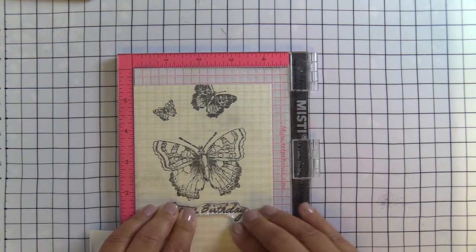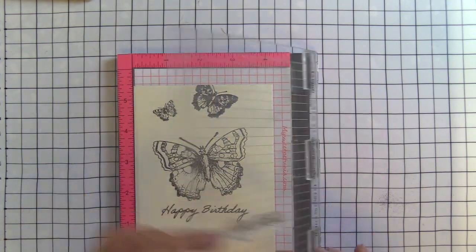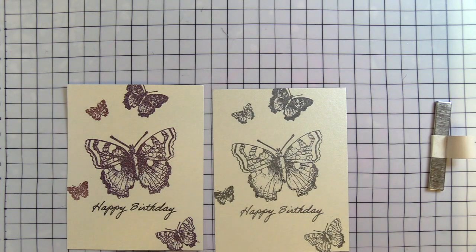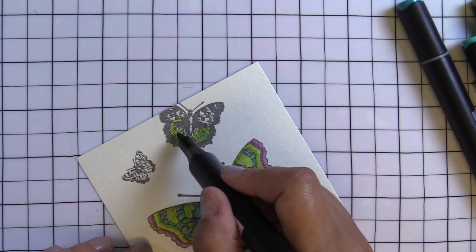So I'm going to use the happy birthday sentiment and I'm going to go ahead and stamp that now before stamping the rest of the butterflies. So here's the rest of the butterflies. I wanted a couple of them to be off the paper and then we're going to go ahead and do some copic coloring.